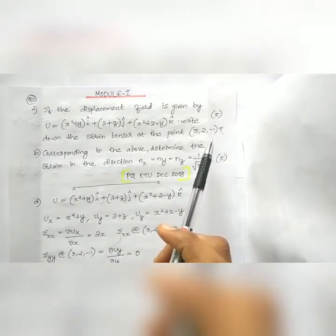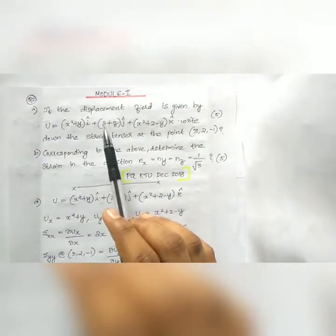Okay, strain tensor at (3, 2, -1) at that point. Strain tensor, displacement field values are given in the first question.